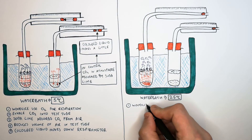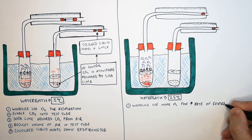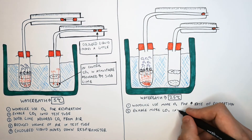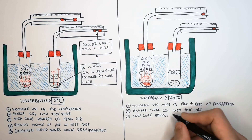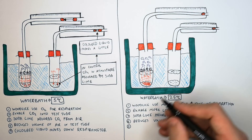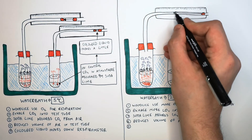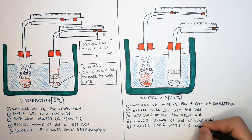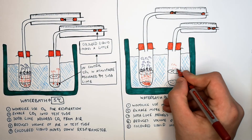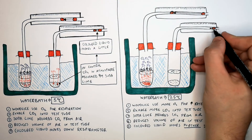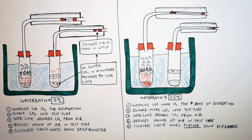At 25 degrees Celsius, the wood lice use more oxygen for an increased rate of respiration compared to 5 degrees Celsius. They exhale more carbon dioxide into the test tube's atmosphere; the soda lime absorbs that CO2, reducing the volume of air in the test tube. Therefore, the more oxygen inhaled by the wood lice for respiration, the further the coloured liquid moves down the respirometer. The soda lime in the control test tube still absorbs CO2 from the atmosphere, causing a slight pressure change and a small movement of the coloured liquid — but nowhere near as much as in the respiring organisms' tube.